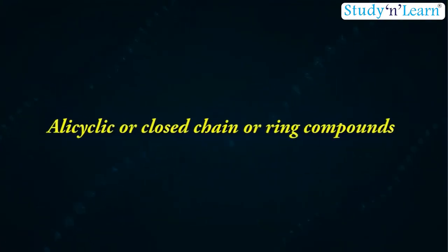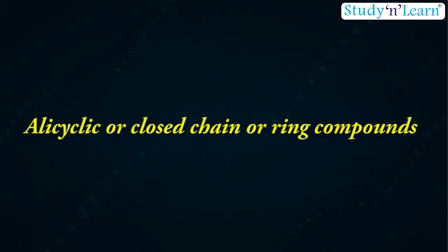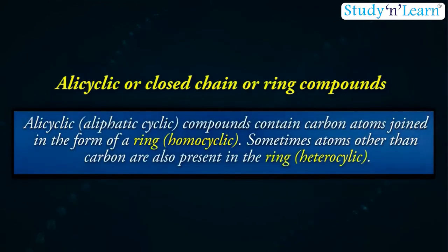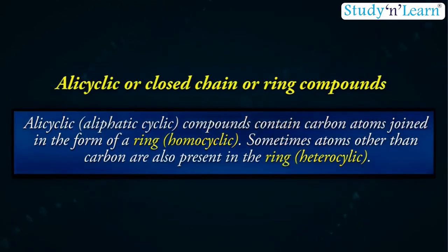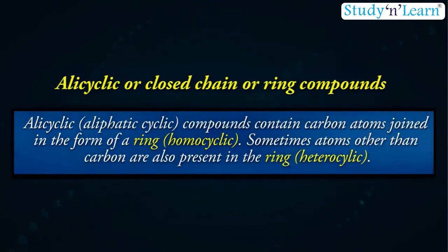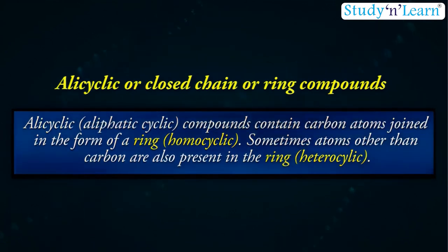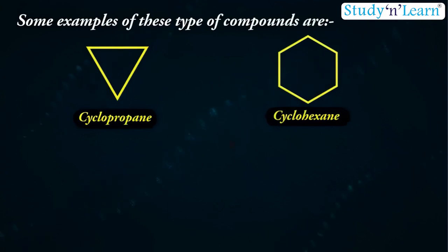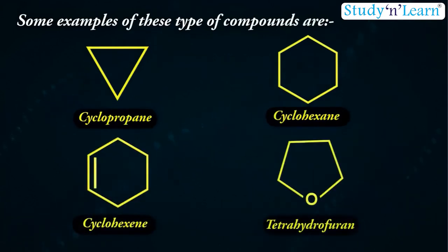Now let us see alicyclic or closed-chain or ring compounds. Alicyclic or aliphatic cyclic compounds contain carbon atoms joined in the form of a ring or homocyclic. Sometimes, atoms other than carbons are also present in the ring, i.e. heterocyclic. Some examples of these types of compounds are cyclopropane, cyclohexane, cyclohexene and tetrahydrofuran. These exhibit some of the properties similar to those of aliphatic compounds.